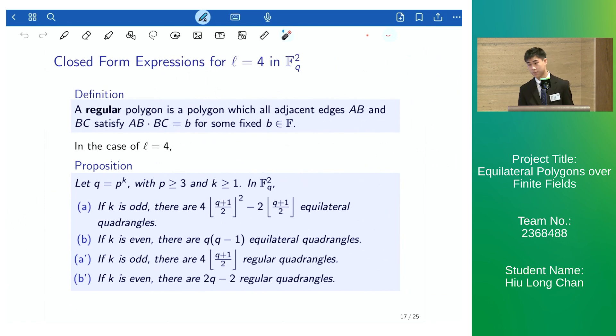A regular polygon is a polygon in which all adjacent edges satisfy AB dot BC equals to b. Basically, this means that the internal angles are all the same.